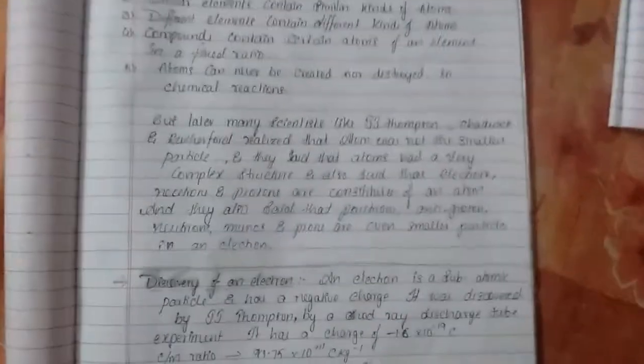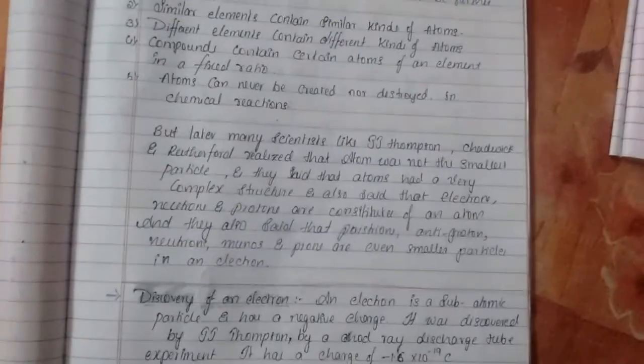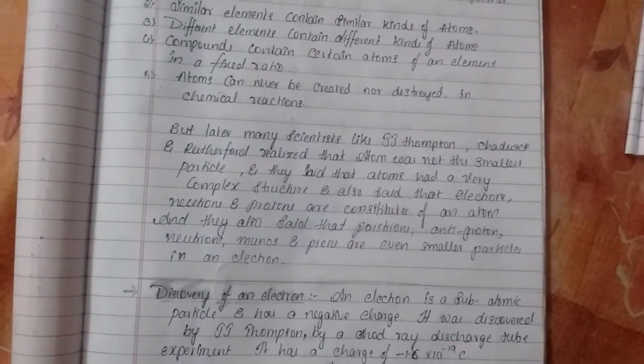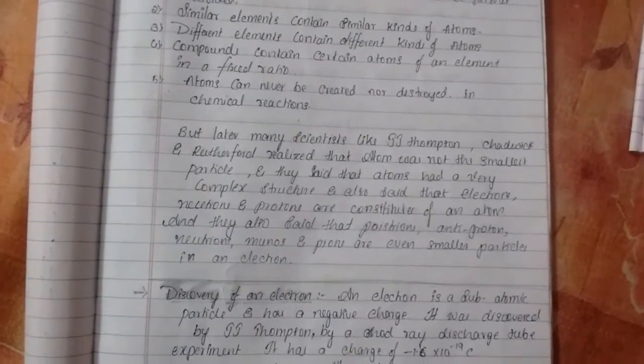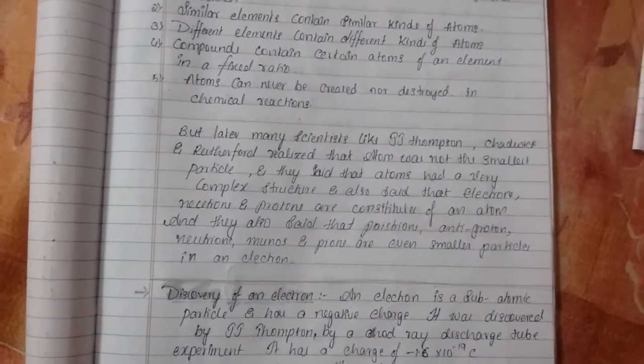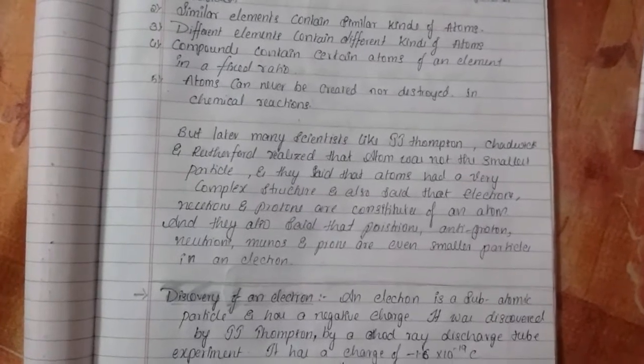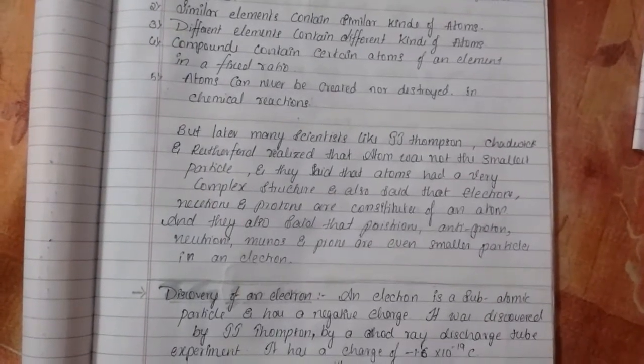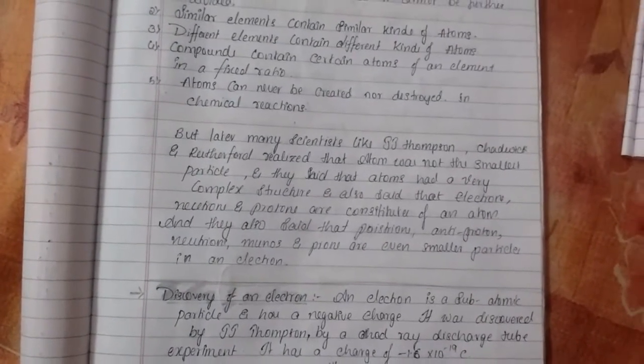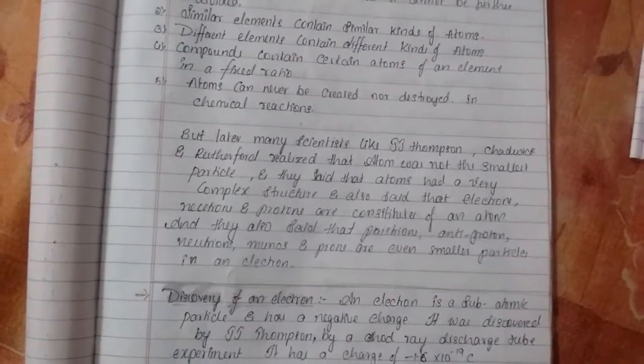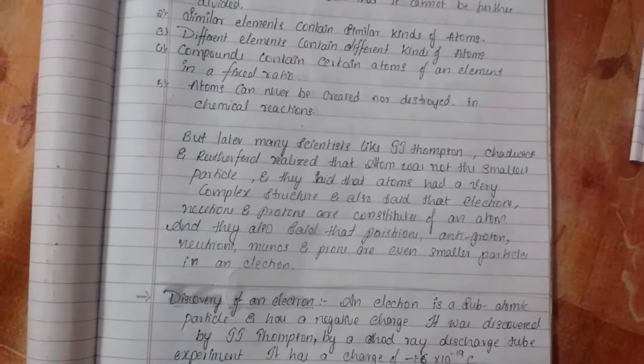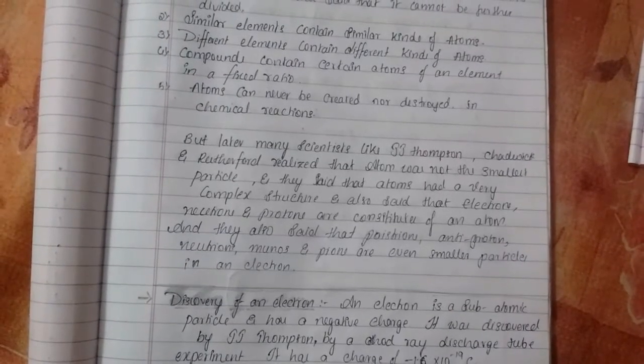But later, after the experiments by many scientists like J.J. Thomson, Chadwick, Rutherford, they realized that atom was not the smallest particle and they had said that atoms had a very complex structure and it includes many more particles such as electrons, protons, neutrons. And they also said that there's many more subatomic particles like positrons, antiprotons, neutrons, muons, pions, etc.